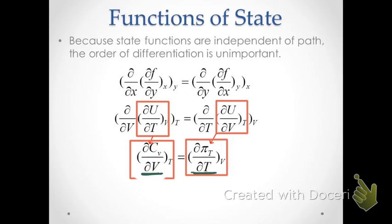For an ideal gas, the internal pressure is equal to zero. Therefore, its derivative is also equal to zero, which means that for an ideal gas, the heat capacity does not change when we change the volume under isothermal conditions. The constant-volume heat capacity will not change with volume for an ideal gas. However, for systems that have real interactions, the constant-volume heat capacity may change when we change the volume — something to keep in mind in later calculations.